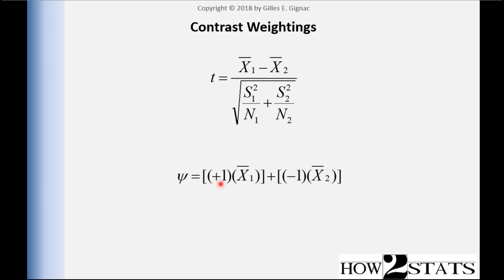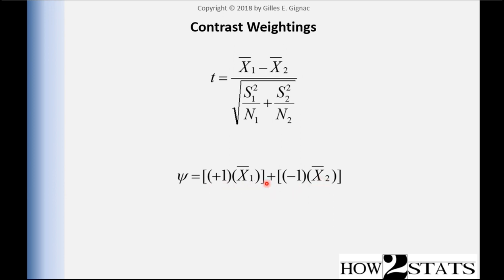What's important is that each mean is associated with a weighting. In this case, the weighting for mean 1 is plus 1, and for mean 2 it's negative 1. When you solve this, you ultimately get the same thing: mean 1 minus mean 2. So even though we're summing, we actually have multiplication taking place — mean 1 times plus 1 is mean 1, and mean 2 times negative 1 turns into a negative value. When we add those, we find that we're just getting mean 1 minus mean 2.